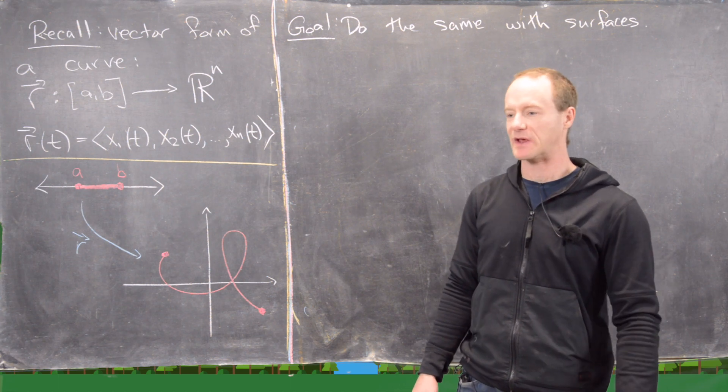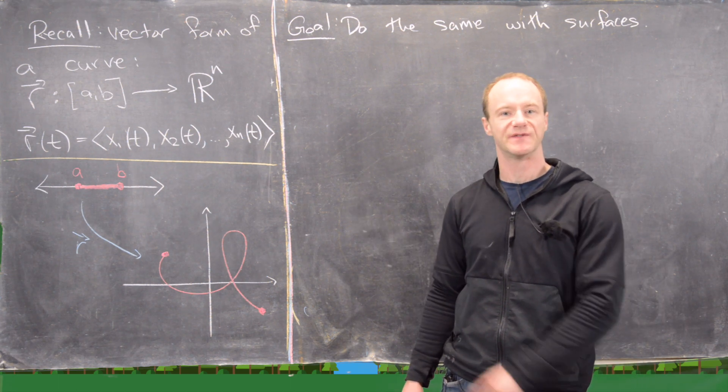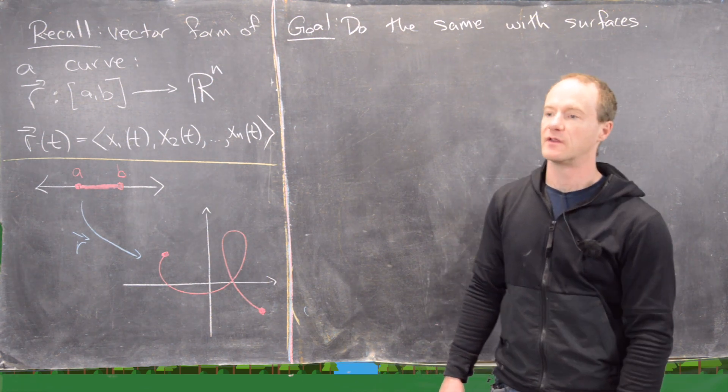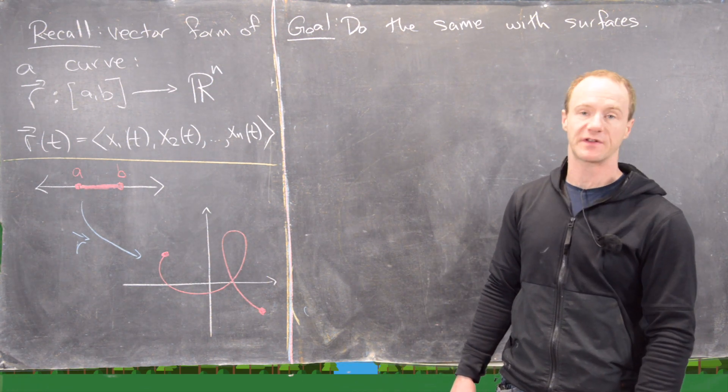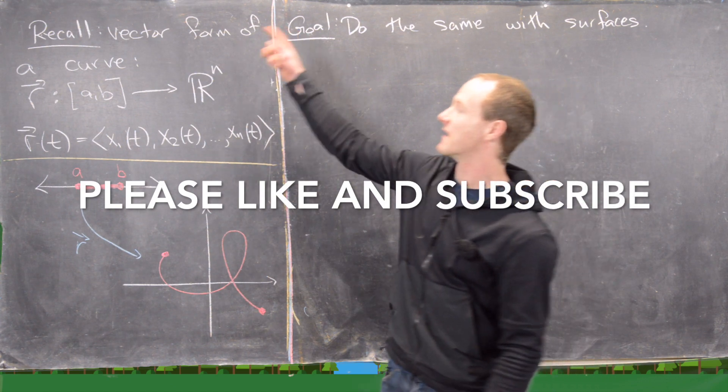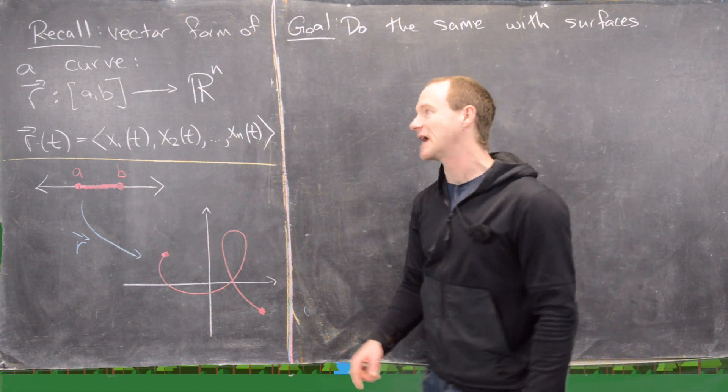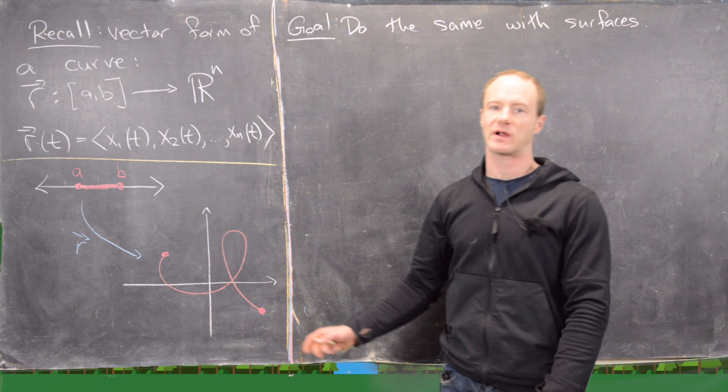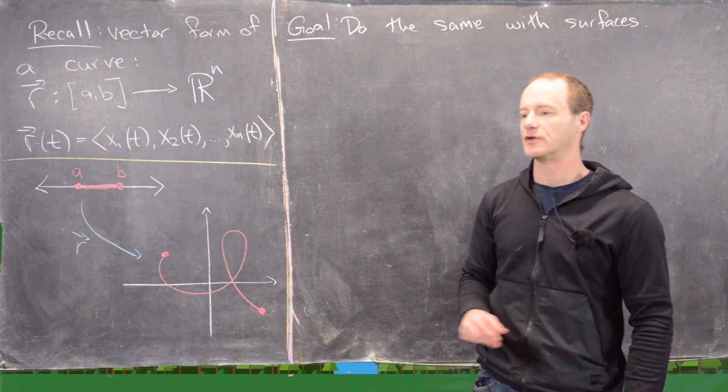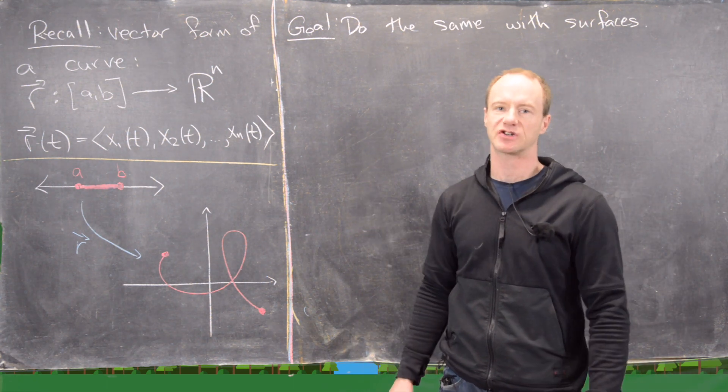I want to recall something from way back at the beginning of this course, or if you're watching just the videos, way back earlier in the videos in the playlist for multivariable calculus. We had this vector form of a curve, and the idea is this is another way of parametrizing the curve with a vector-valued function instead of a list of parametric equations.